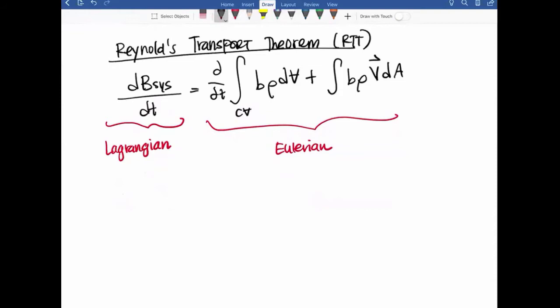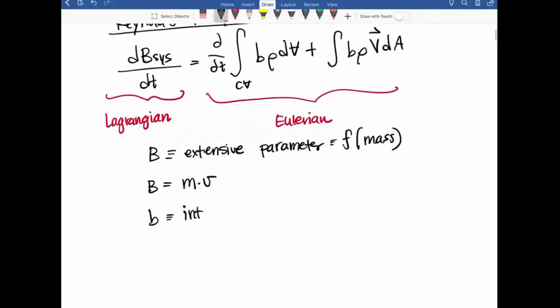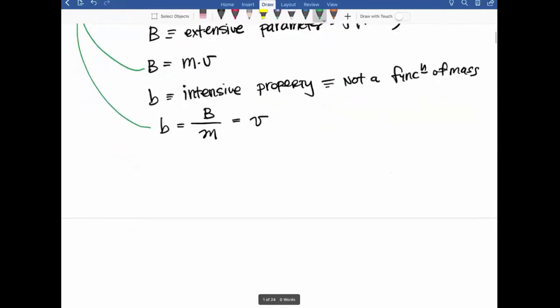We have dB of the system dt equals d dt across the control volume, little b density change in volume, plus little b density directional velocity dA. This is our Lagrangian perspective, and this is our Eulerian perspective. What I'm going to do is substitute capital B and little b for this equation. Capital B is our extensive parameter, which is a function of mass.